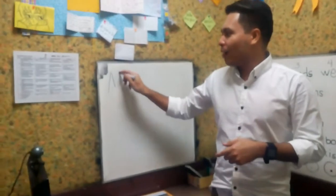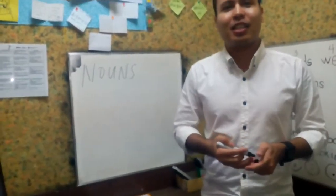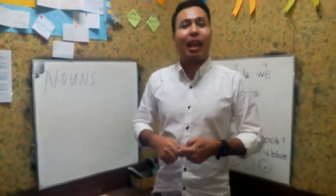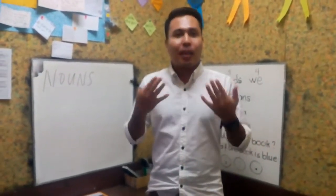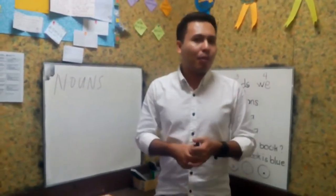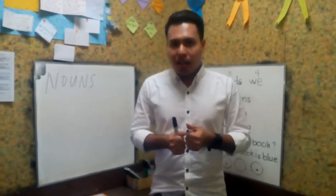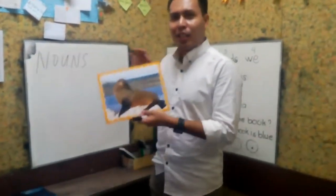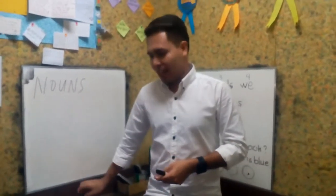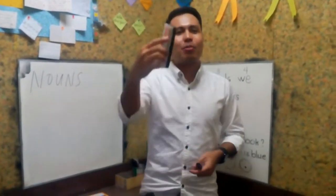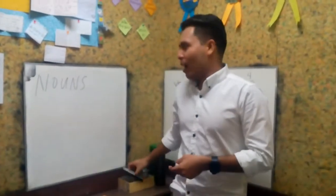A noun is a part of speech that describes the name of a person — that is me, Teacher Berry — places, like China or Japan, animals, like the ones on the picture — very cute animals — and things. For example, an eraser. So that is a noun.